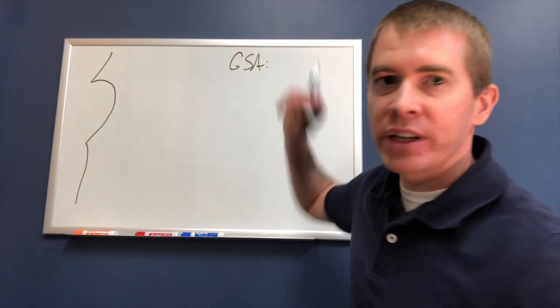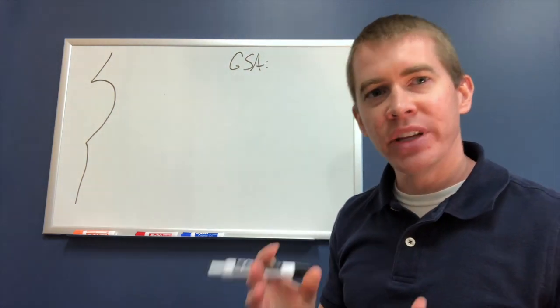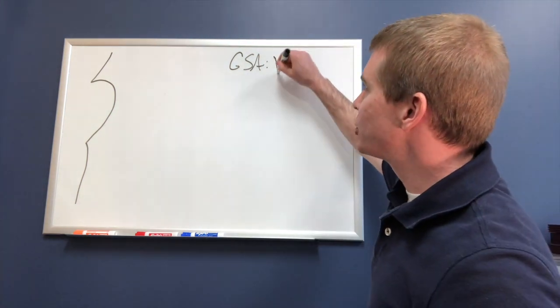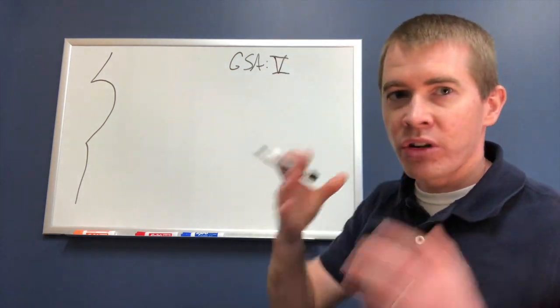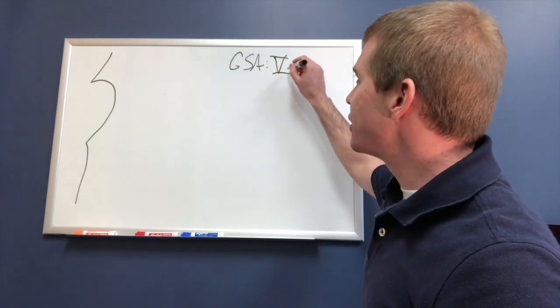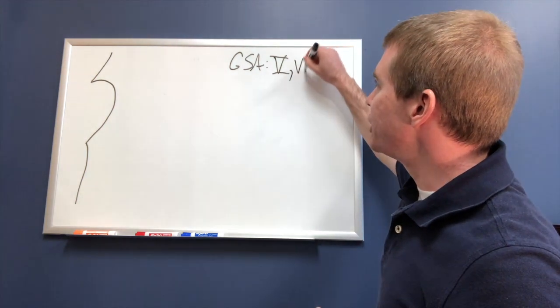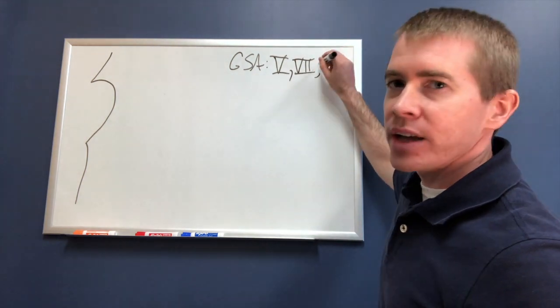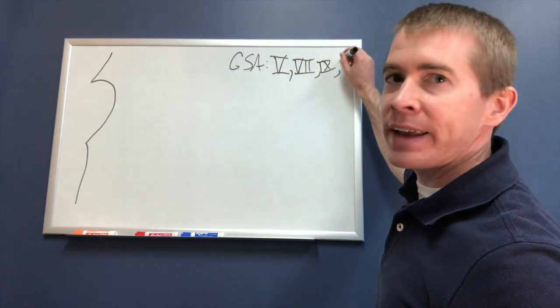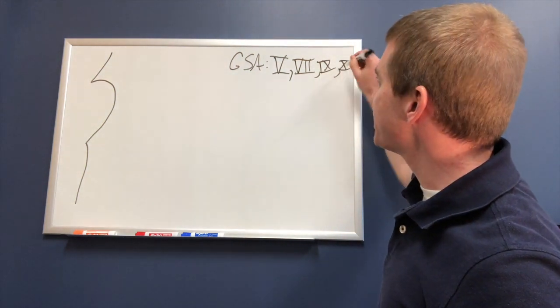We have to think about which cranial nerves have GSAs. Of course, the easiest one is trigeminal. It does sensation to all the different portions of the face. But there are also other cranial nerves with GSA components: facial or cranial nerve 7, glossopharyngeal cranial nerve 9, and vagus cranial nerve 10.